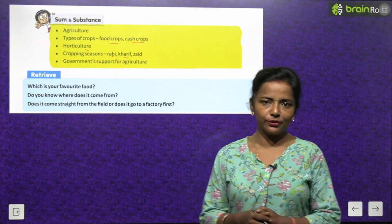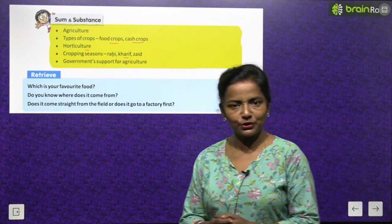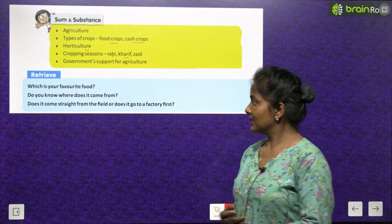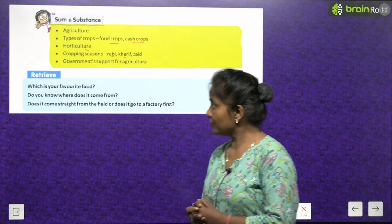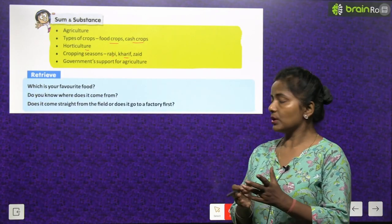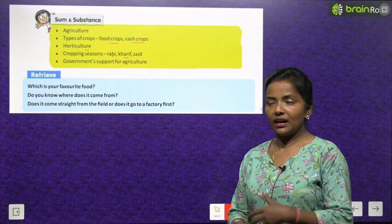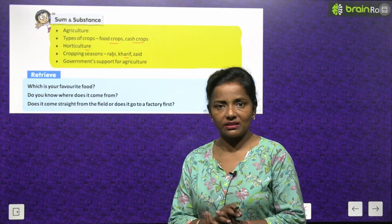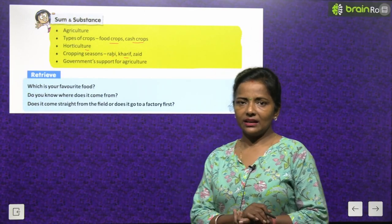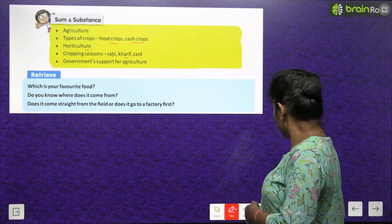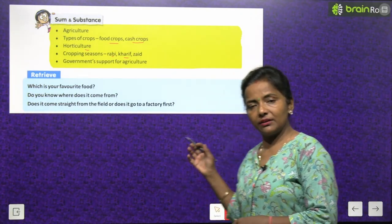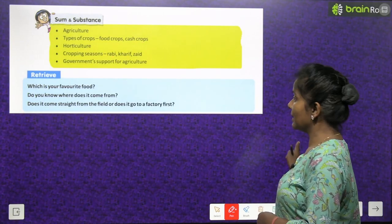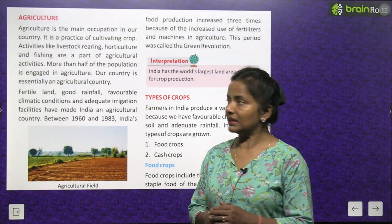Now, retrieve: which is your favorite food? Do you know where it comes from? Does it come straight from the field, or does it go to a factory first? We'll find out the answers to these questions while reading this chapter.